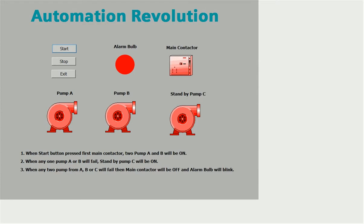What are the benefits of using memory bit? First, when taking any input from the PLC, it is not necessary that the PLC input is continuously on. Many times we are taking only a pulse from a PLC input, like in the case of a proximity sensor or photo sensor. That type of input will give you only a pulse. If you want to take a reference input for that pulse, or to reduce network complexity, we use a memory bit as a reference bit.